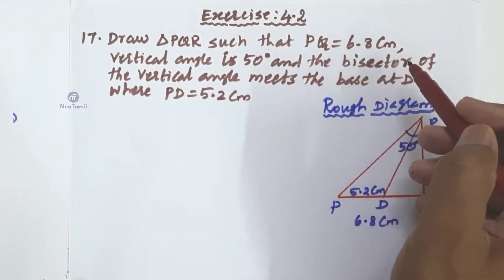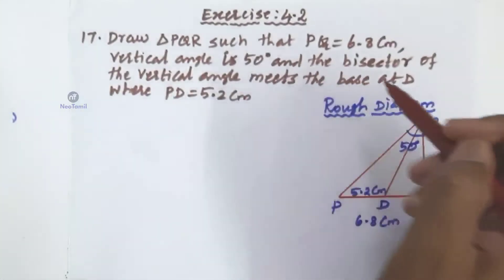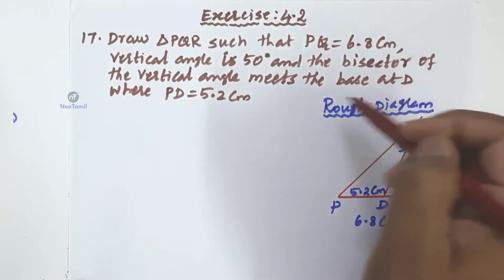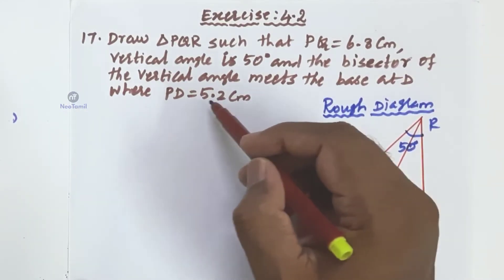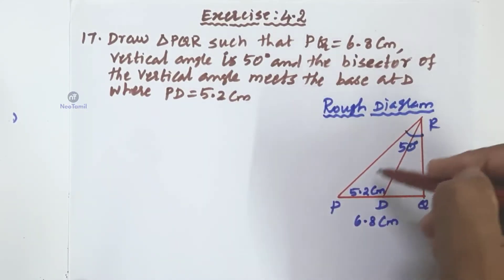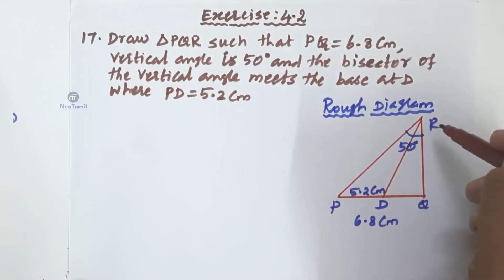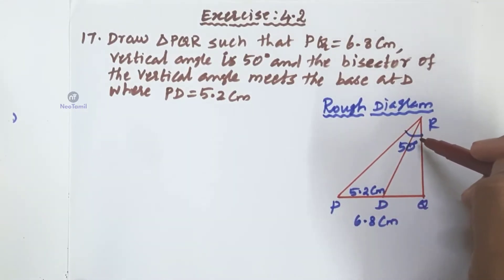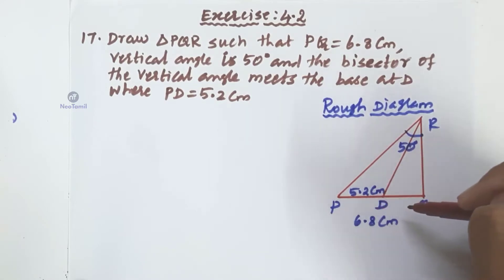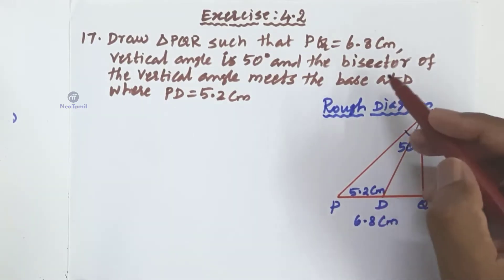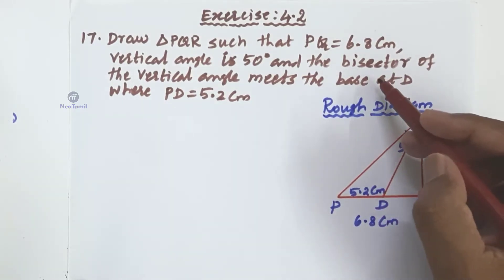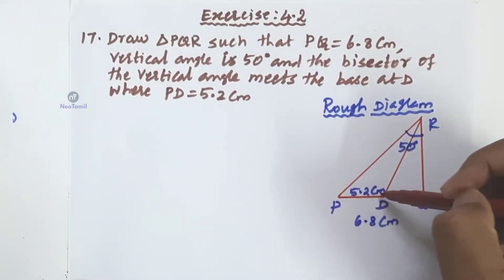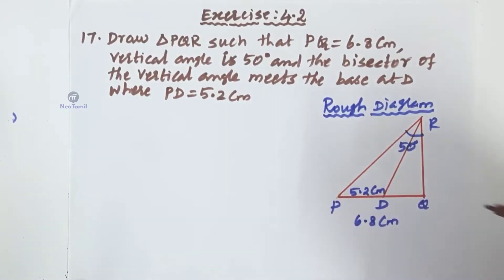So the base and vertical angle are given. The bisector comes to the base and meets the concept. In the rough diagram, the peak angle — the vertical angle — is 50 degrees above. The base is 6.8 cm. The bisector meets the base at D, with PD equal to 5.2 cm. This is the rough diagram.